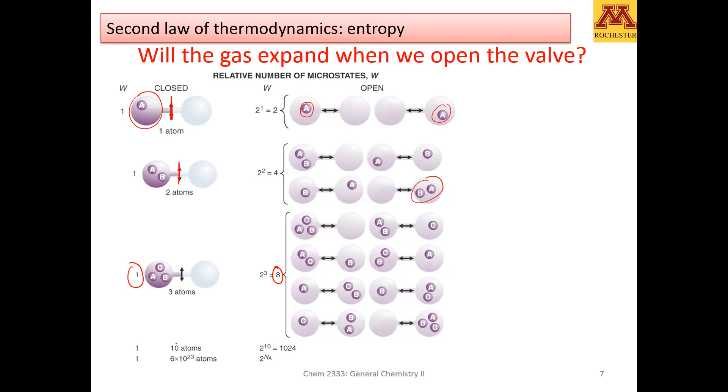In that case, if I have ten atoms, the possible combinations that I can arrange equivalently the molecules is 2 to the 10. That is a thousand, more than a thousand.